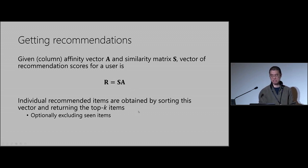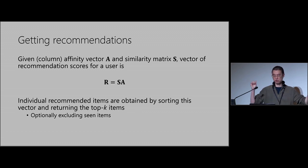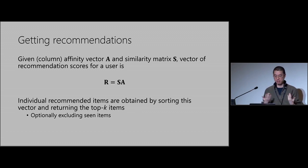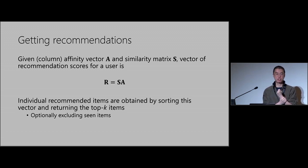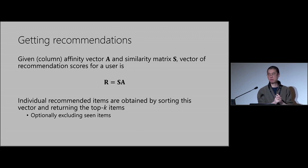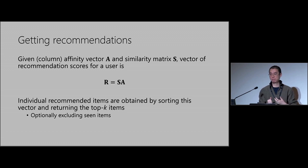This gives you a vector of scores, and you just sort that and return the top 10, or top five, or however many you want. You can also exclude the seen items — so if someone has already seen Star Wars, you don't want to recommend it again.